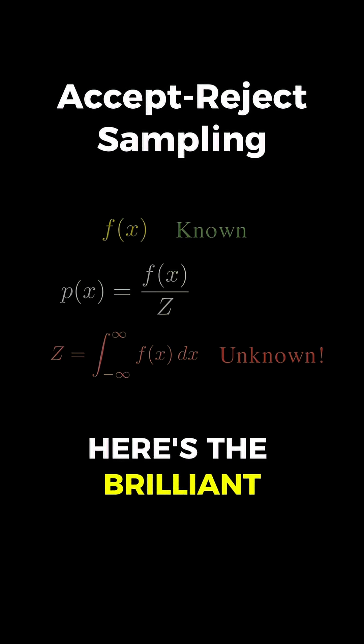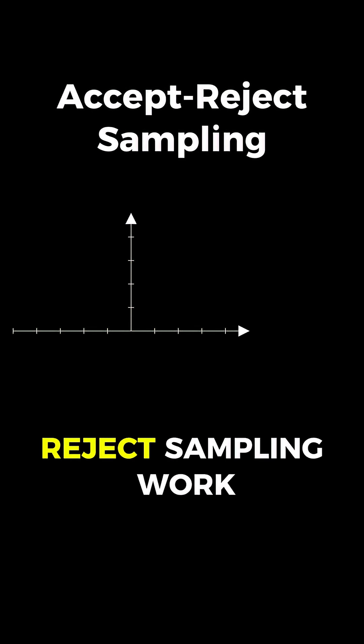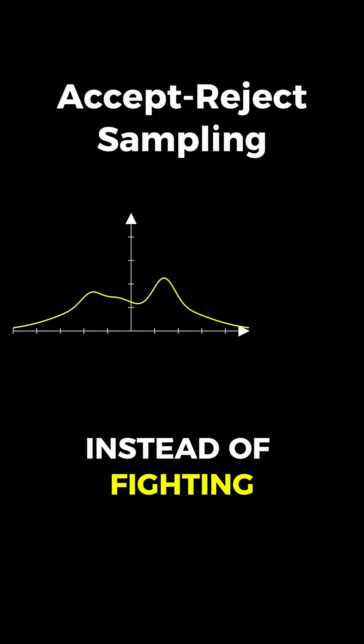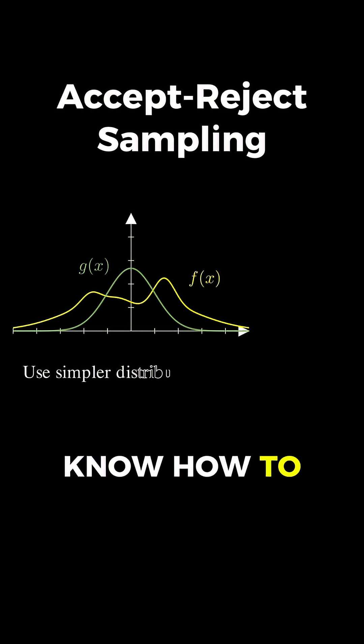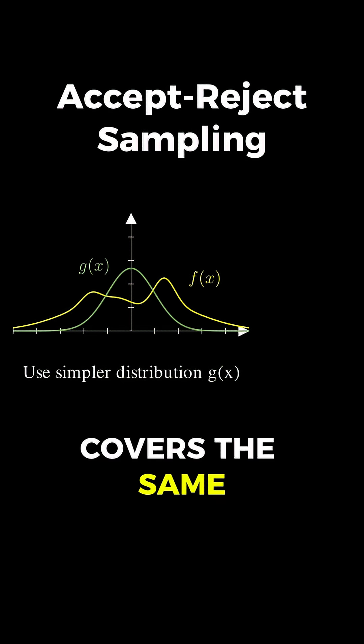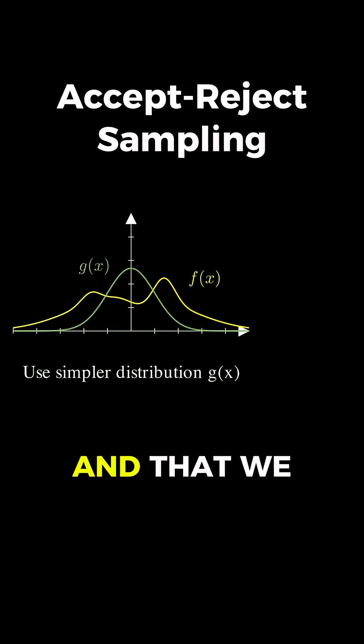Now, here's the brilliant idea that makes accept-reject sampling work. Instead of fighting with this difficult distribution directly, we're going to use a simpler distribution g that we already know how to sample from, like a normal distribution. And the only requirements are that g covers the same domain as our target, and that we can easily generate samples from it.